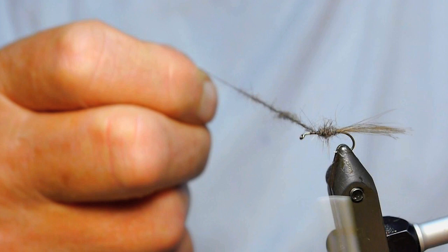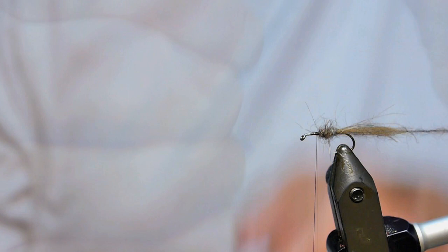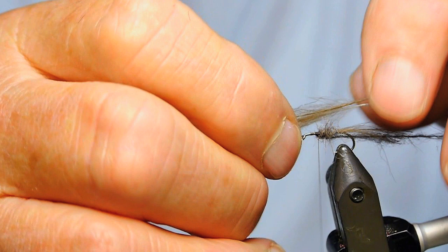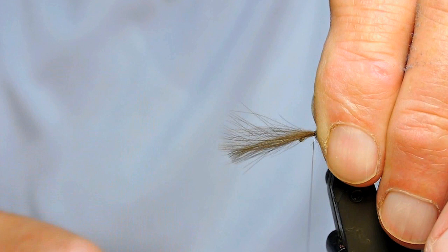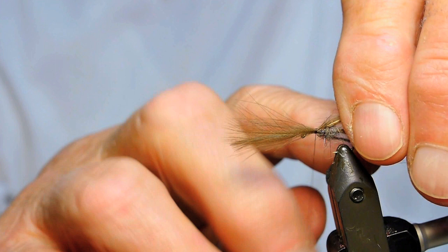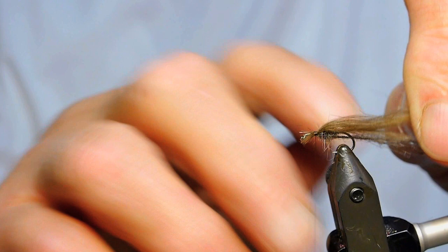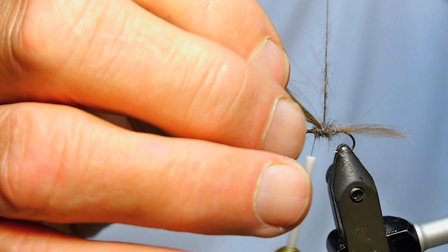What I do is get the two CDC feathers married together, place them on top of the hook, not too tight. That just helps it to stand up by putting those couple of turns in the back edge of it there.